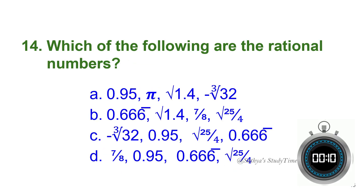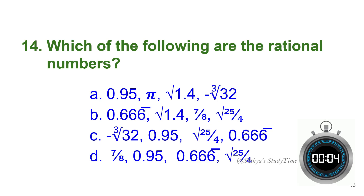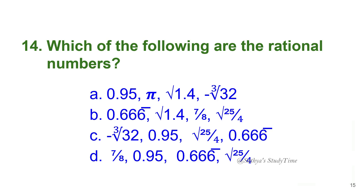Fourteenth question: Which of the following are rational numbers? Your time starts now. The answer is option D. You can write in the comments why option D is said to be rational numbers.